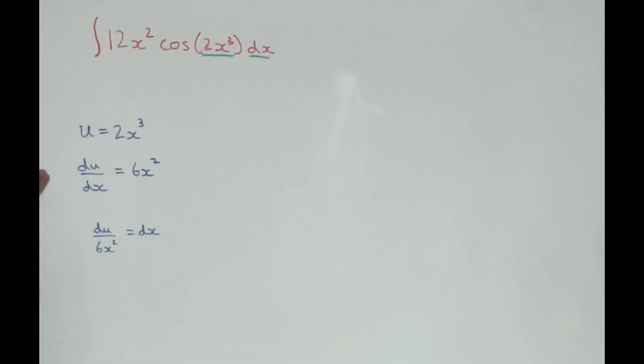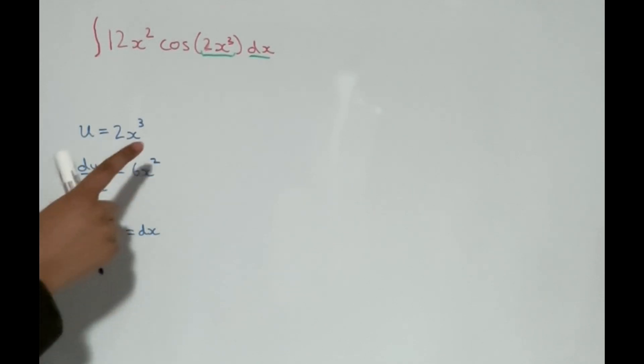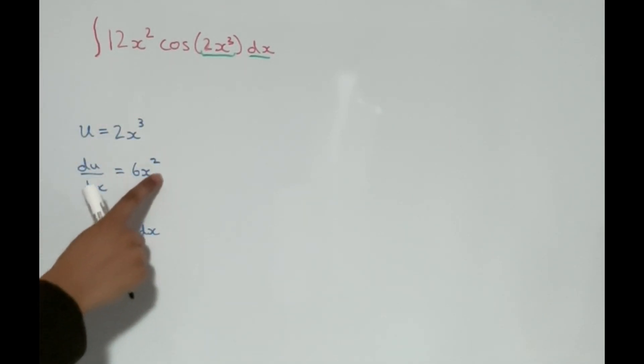So if u is 2x cubed, its derivative du/dx is going to be 2 times 3, which is 6x to the power of 2.